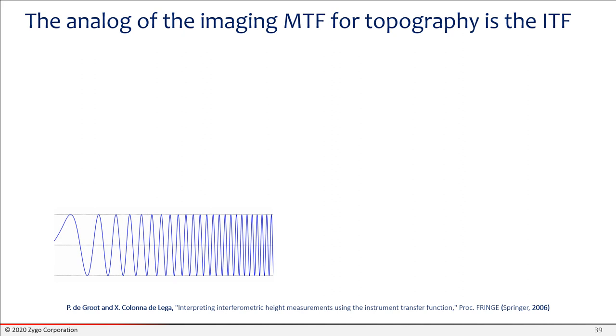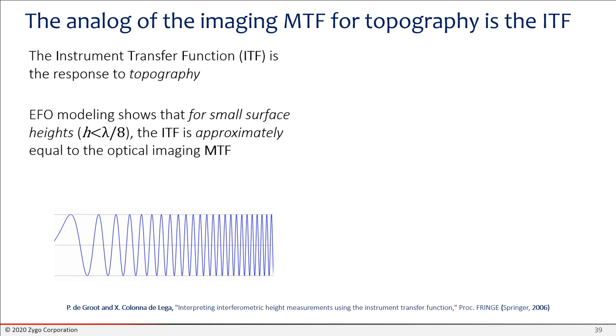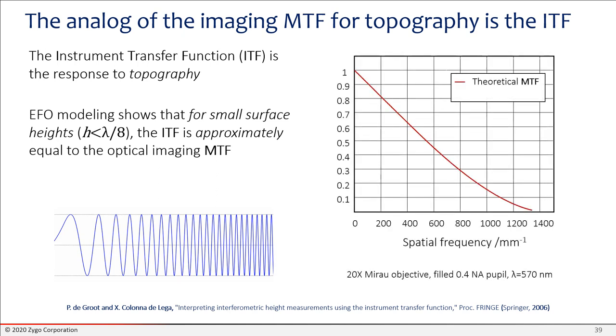The analog of the imaging modulation transfer function for surface topography is the instrument transfer function. So if the system is linear, you can use this instrument transfer function. That tells you how the interferometer, the measuring instrument, will respond to topography variations. Now what we found is with the EFO, if you have small surface height variations, then the ITF is approximately equal to the optical imaging MTF. So this was shown some years ago, and it's a nice result because it means that if you calculate the theoretical MTF, you have a fair idea of what the transfer function characteristics are going to be of your interferometer. So this compares the measured ITF, what is actually measured on the instrument as the response characteristics compared to this theoretical MTF, and you can see they follow each other quite closely, again for small surface heights.